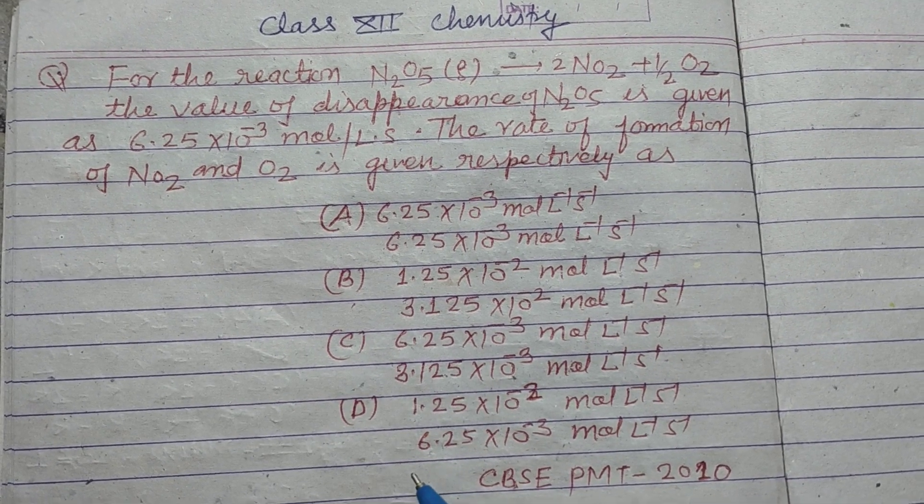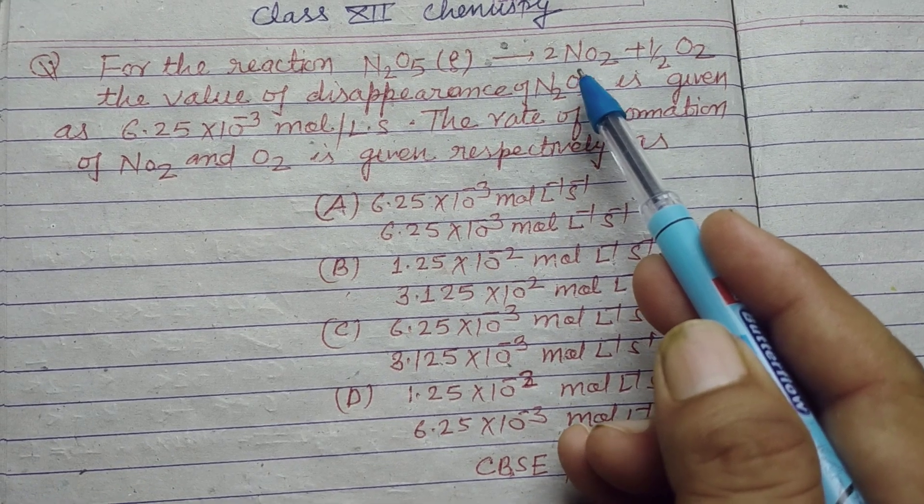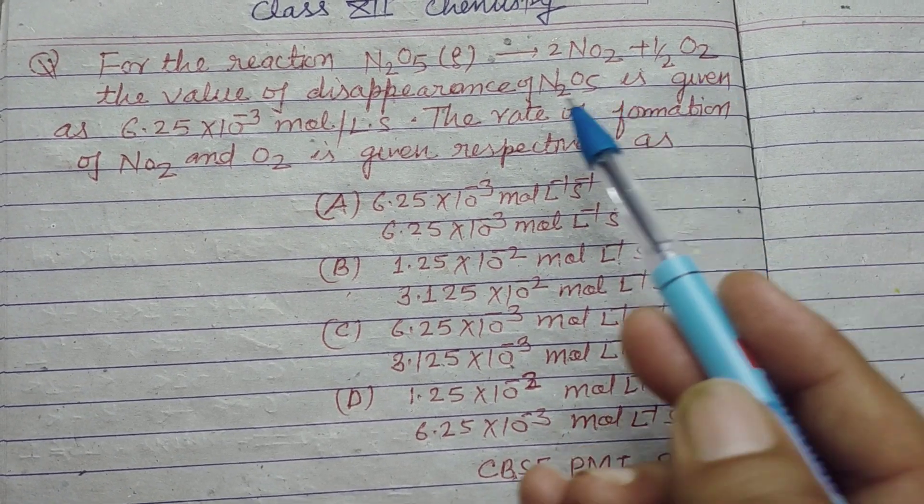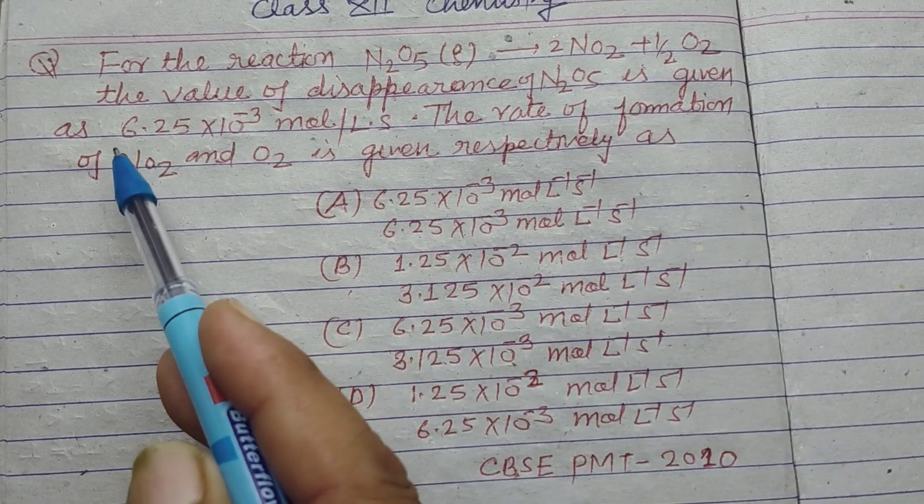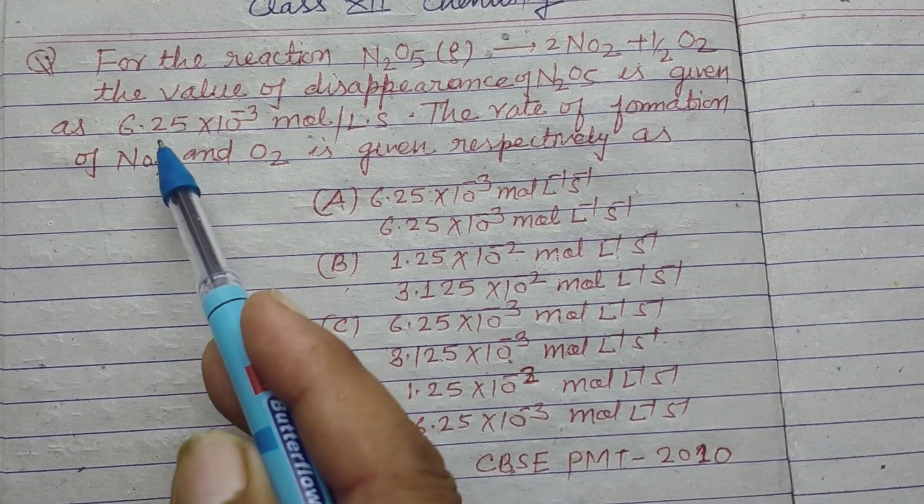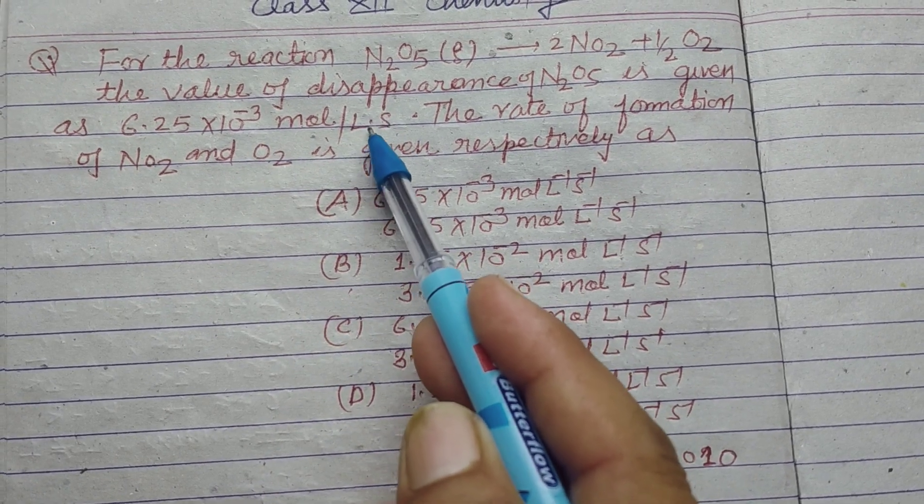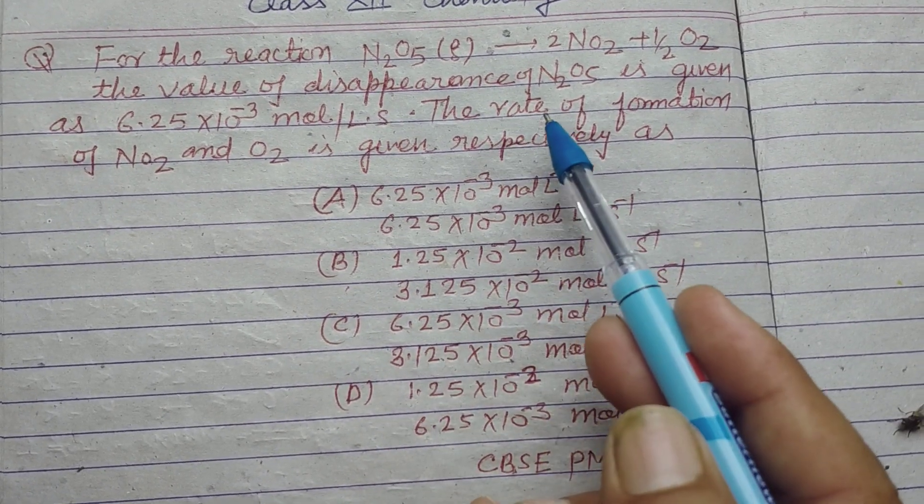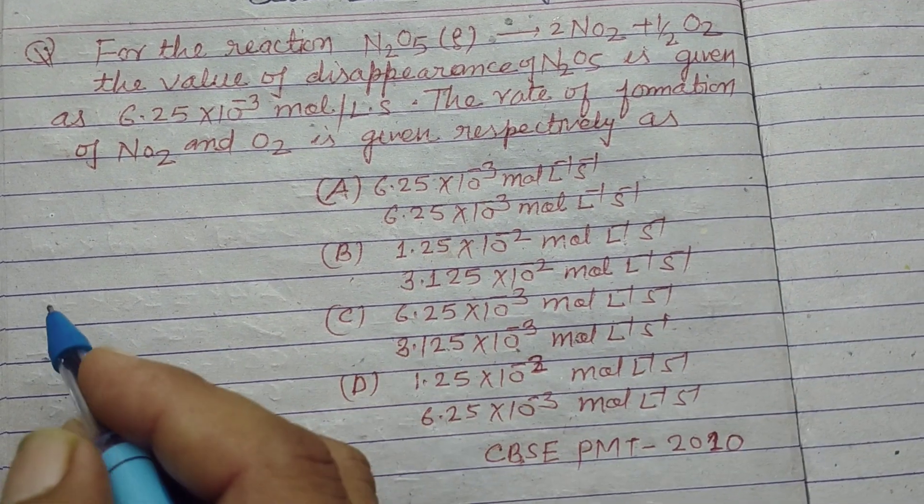Based on chemical kinetics, for the reaction N2O5 gives rise to NO2 plus half O2, the value of disappearance of N2O5 is given as 6.25×10^-3 mole per liter per second. The rate of formation of NO2 and O2 is given respectively as.